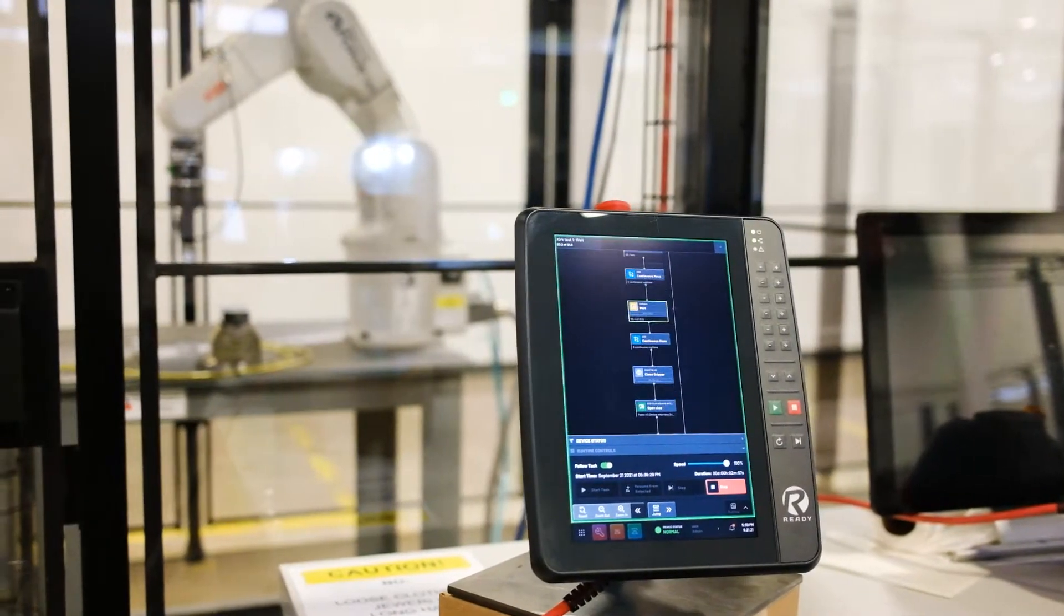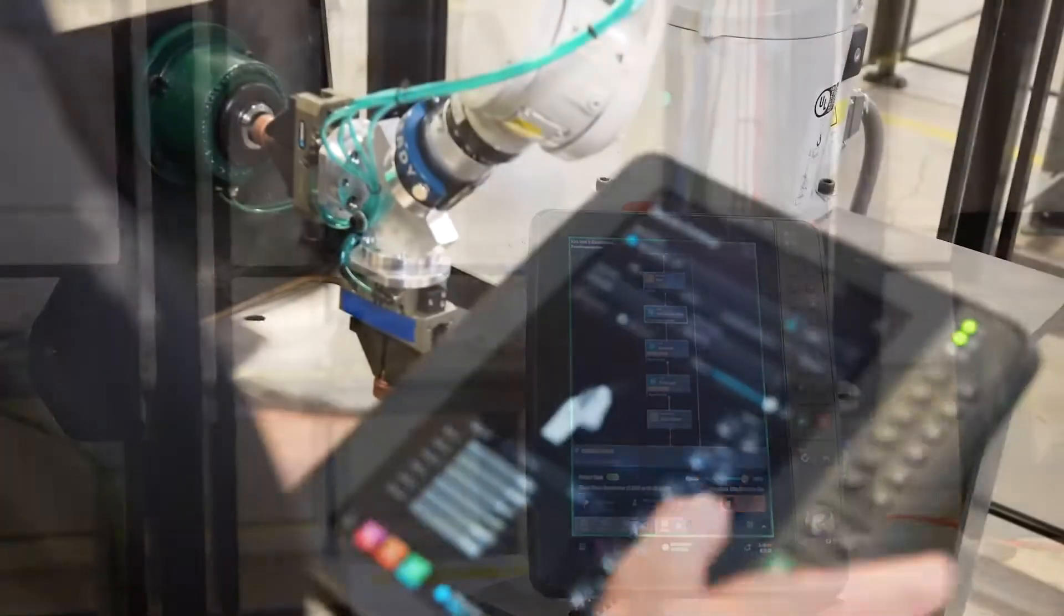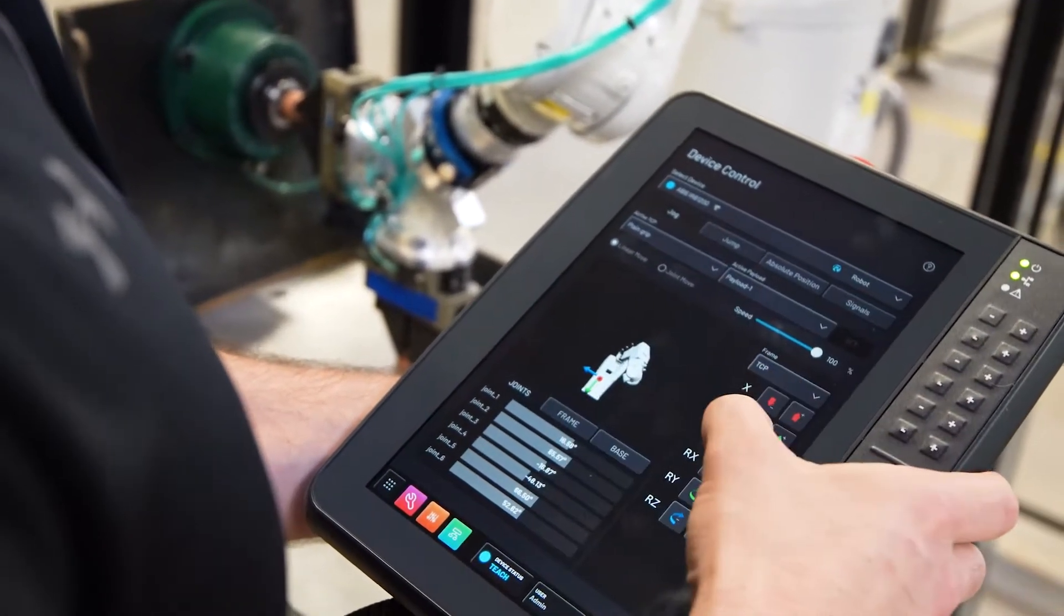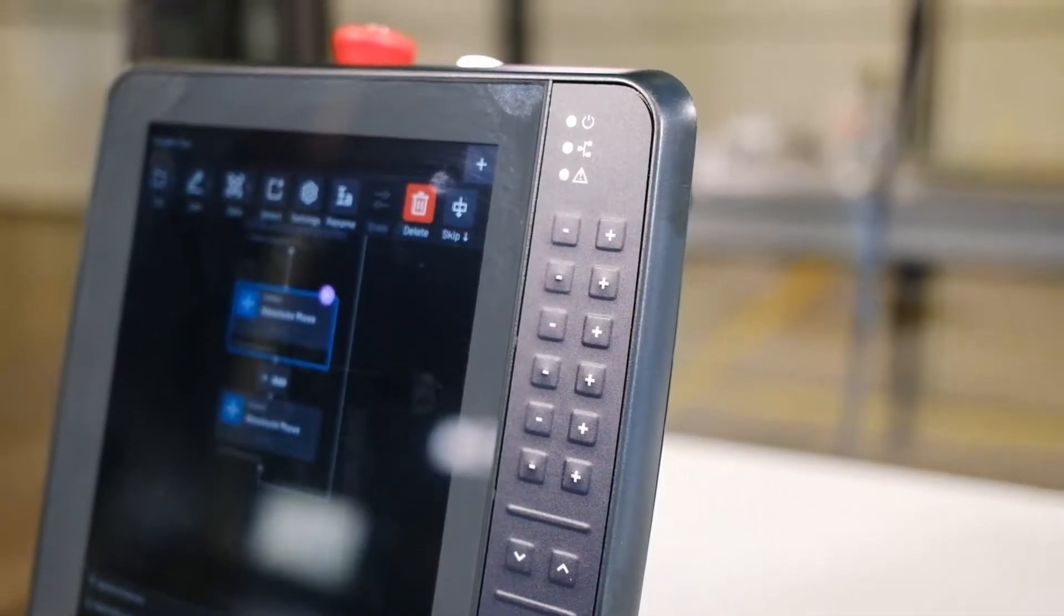The first place to start this tour would be with ForgeOS, the world's first no-code interface for programming and controlling robots and automation devices, regardless of their brand. ForgeOS runs on a Teach Pendant, much like an operating system for a tablet or a computer.